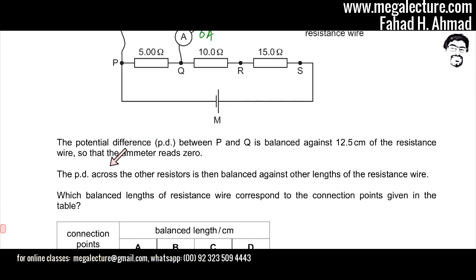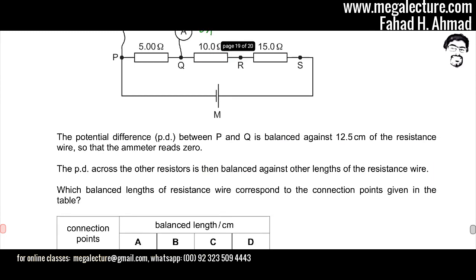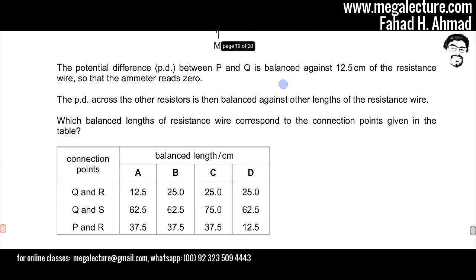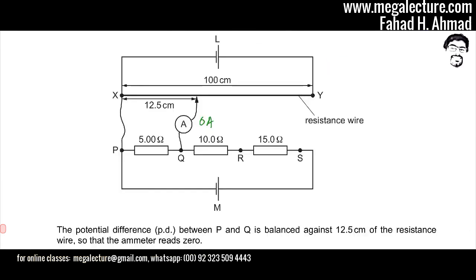The question then asks which balance lengths of resistance wire correspond to the connection points given in the table. The first step is to figure out the voltages across each of the resistors.